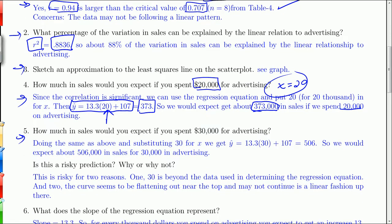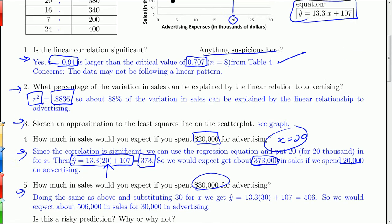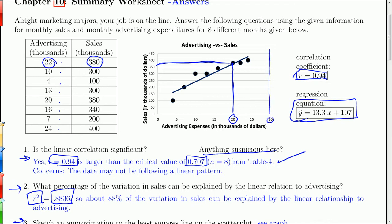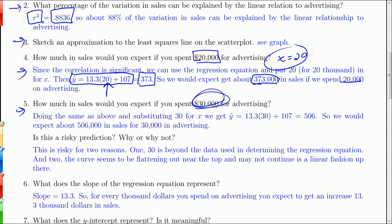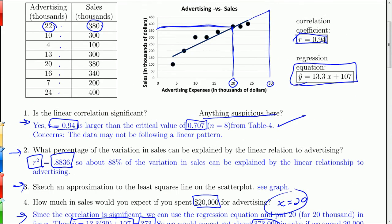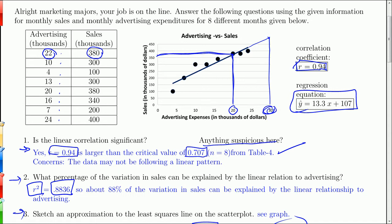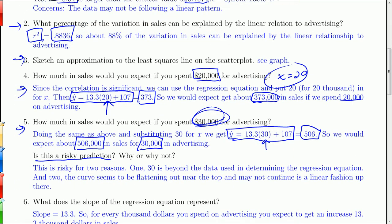How much in sales would you expect to get if you spent $30,000 on advertising? If you stick $30,000 or 30 in for x into the regression equation, you get $506,000. So you'd expect about $506,000 in sales if you spend $30,000 in advertising. Is this a risky prediction? It sure is. You've never spent anywhere in that ballpark before. So you don't know if this regression equation is even valid in that area.